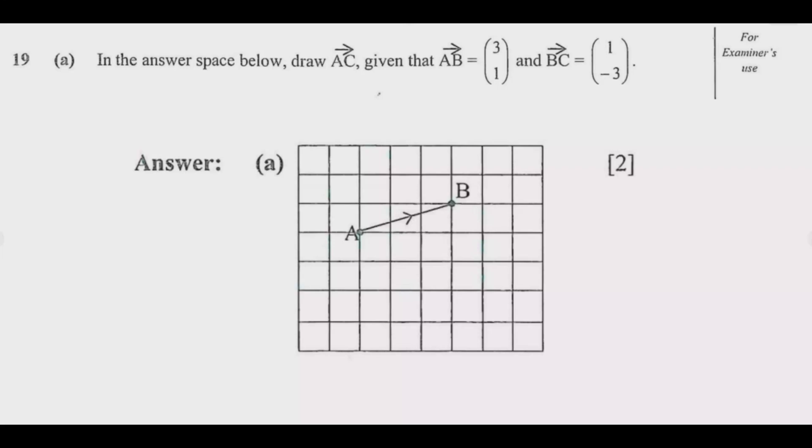So we need to draw AC. AB is given to us, so AB if you notice is one step upward, which is this one, then three steps to the right, which is the positive. So we have one, two, three, then up. Thus the movement of A to B.